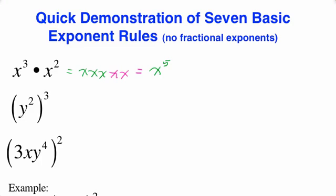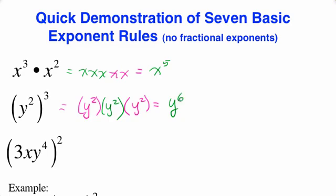Next we have the power to a power rule. In the power to a power rule, you actually have something already raised to a power, such as y squared, but then this is being multiplied by itself three times — y squared times y squared times y squared. Using the product rule, two plus two plus two gives us y to the sixth.